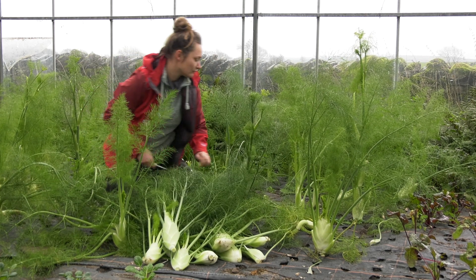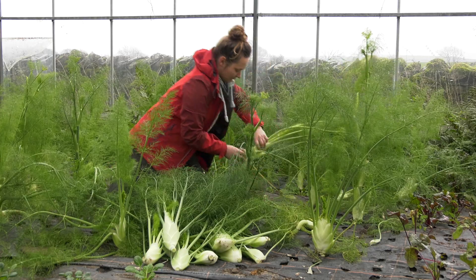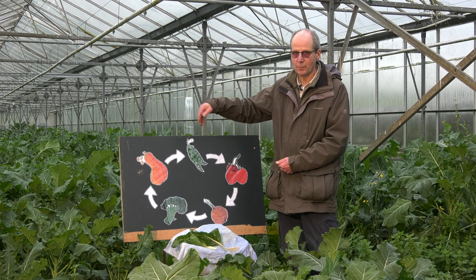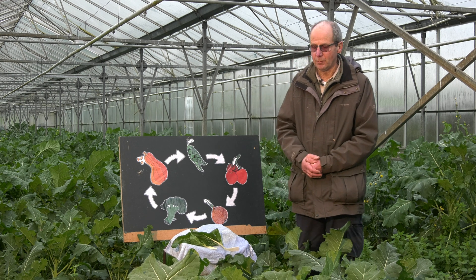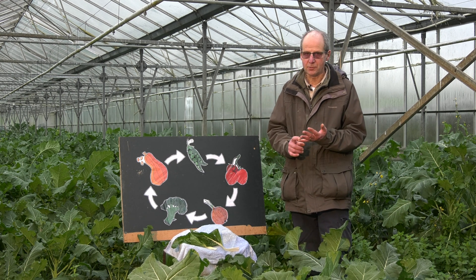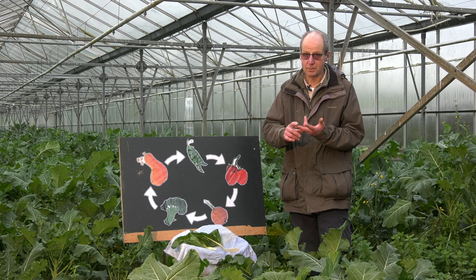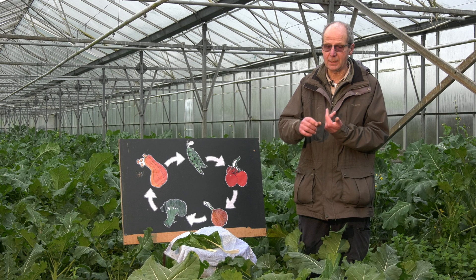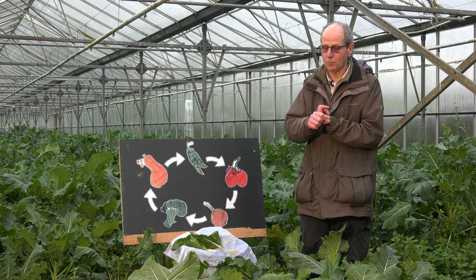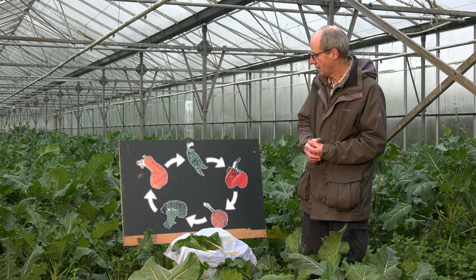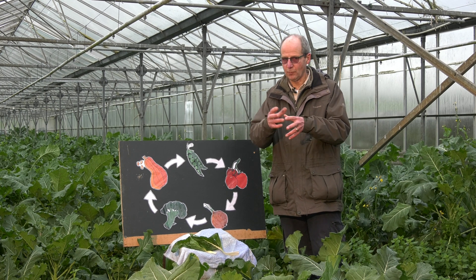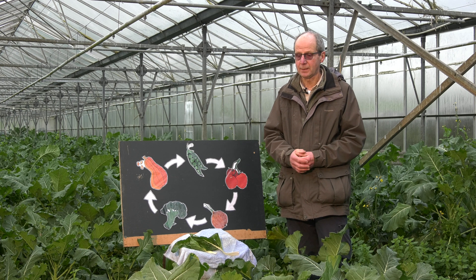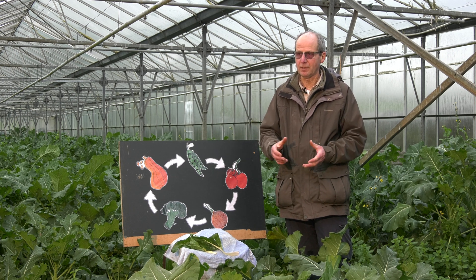I mentioned that we have roots in our rotation. Examples of roots would be beetroot and carrots. We actually include celery, kohlrabi and fennel in that group as well — they aren't all technically roots, but they are all of the same family, a family called the umbelliferae.